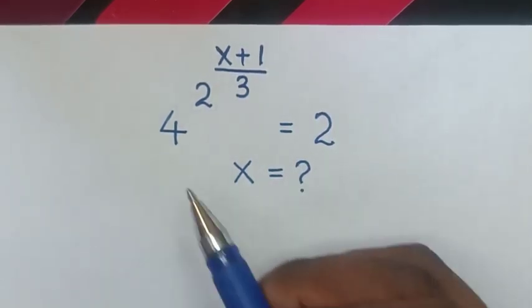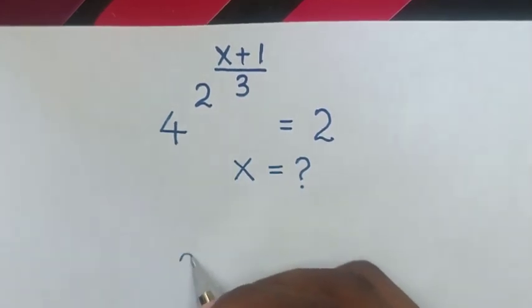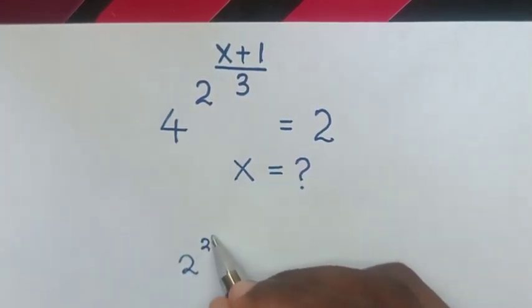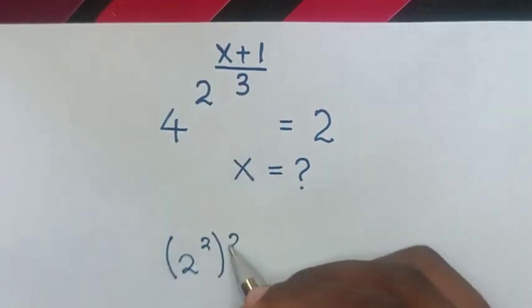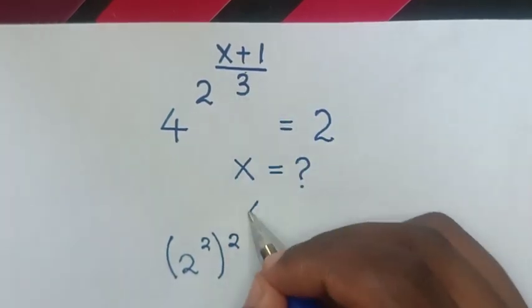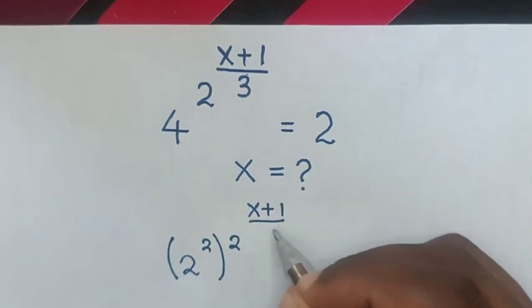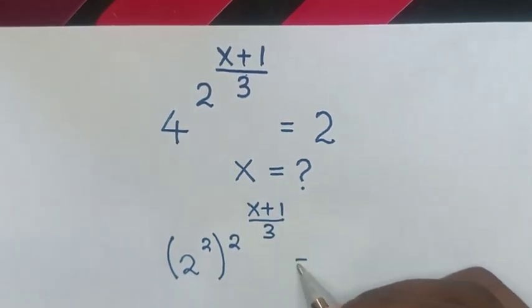So first, from this equation, 4 is the same as 2 to the power of 2, then in brackets to the power of 2, then to the power of (x+1)/3 equals 2.